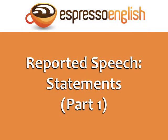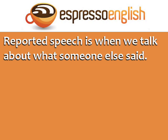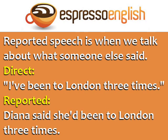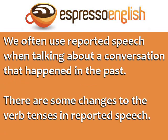Reported speech — Statements, Part 1, from EspressoEnglish.net. Reported speech is when we talk about what someone else said in the past. For example, if your friend Diana said, 'I've been to London three times,' the reported speech is: 'Diana said she'd been to London three times.' We often use reported speech when talking about a conversation that happened in the past, but there are some changes to the verb tenses in reported speech.